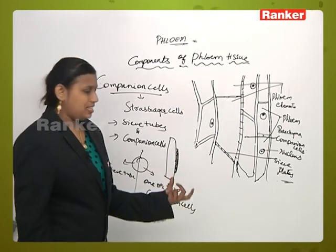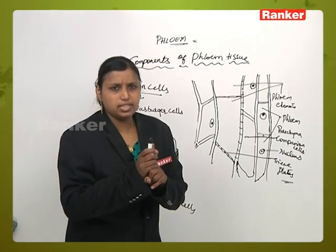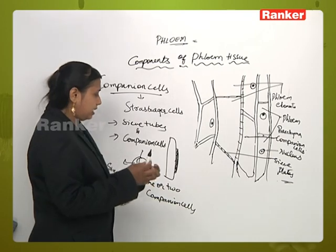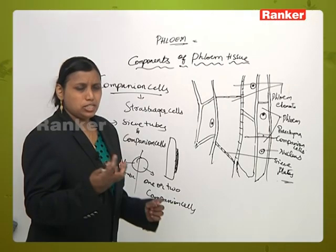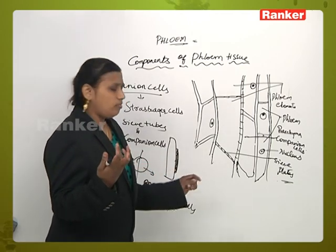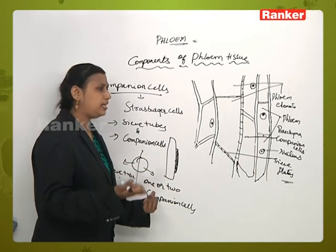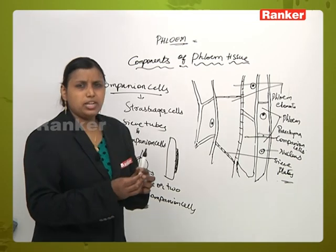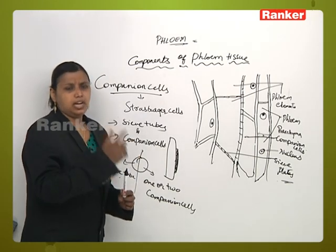These one or two companion cells are highly specialized cells. The sieve tubes may be associated with companion cells or they may be arranged separately. The bonding between sieve tubes and companion cells is such that in spite of many maceration techniques used, we are unable to separate them — sieve tubes and companion cells are inseparable. Sieve tubes may occur in combination with companion cells or individually, and these are arranged one above the other.